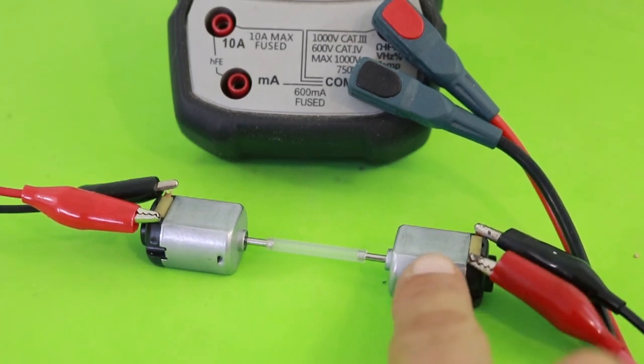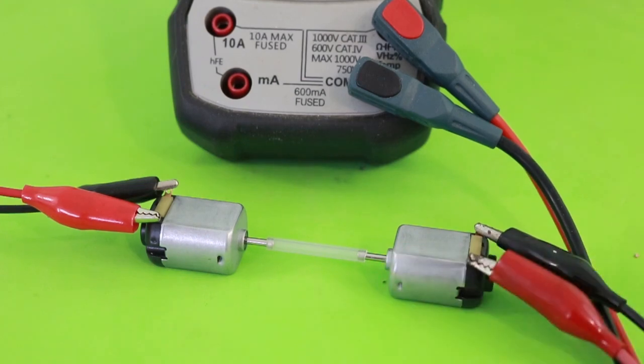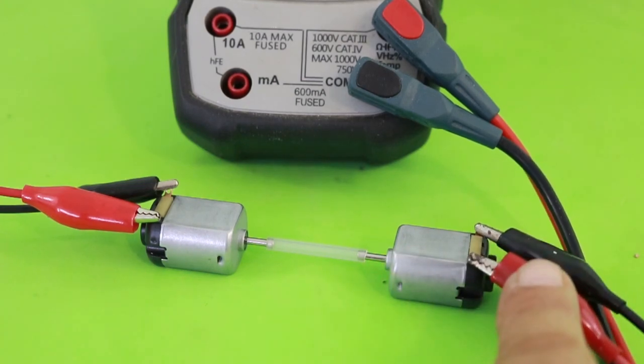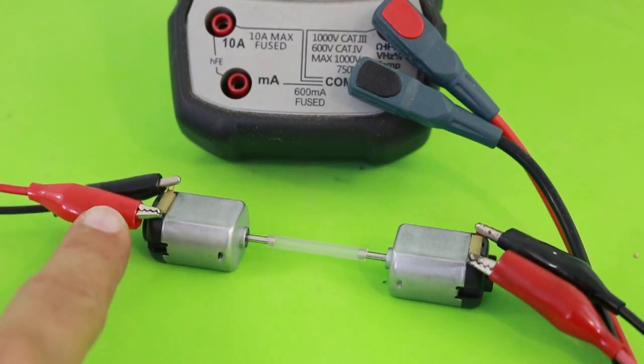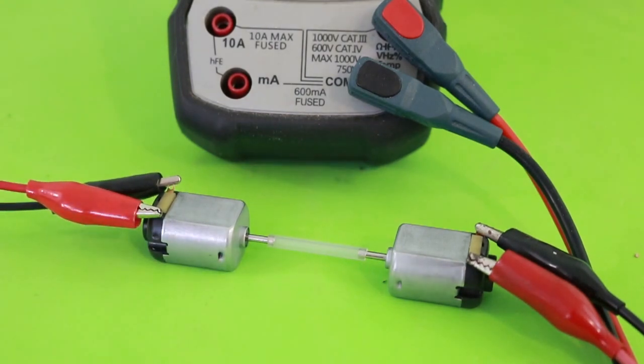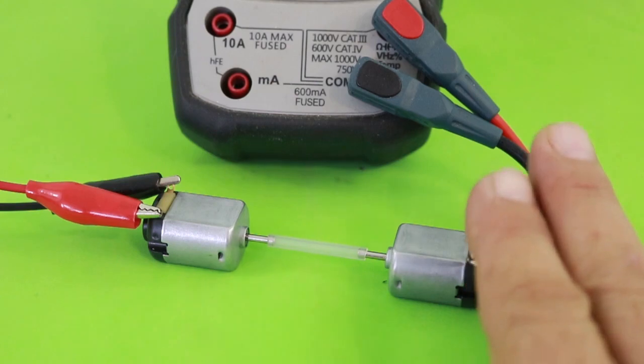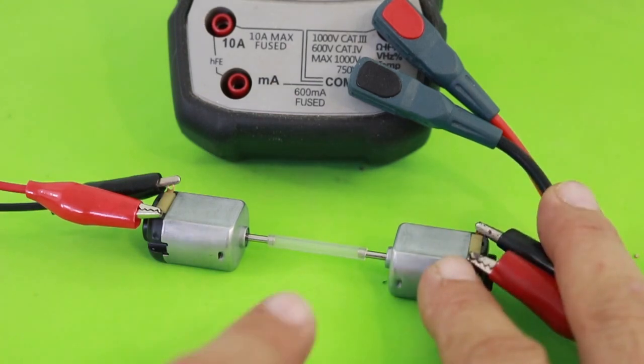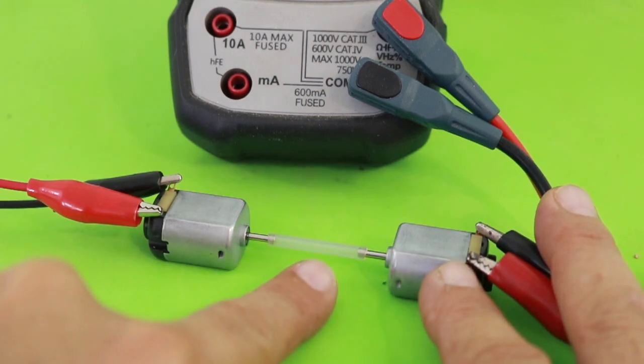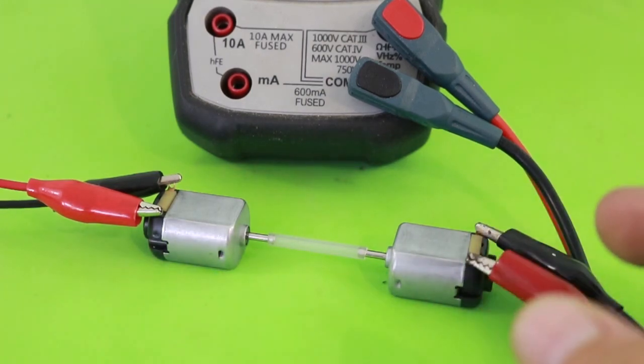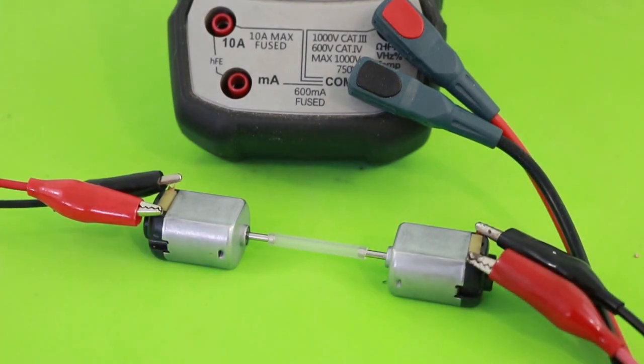I have here this motor, which is acting as a motor. It is connected to the power supply. And this other motor, which is identical, is acting as a generator. It is connected to the multimeter. So I will now apply voltage to the motor. And this motor will move this generator, since they are coupled by this little plastic tube. And let's see the voltage that we can obtain.